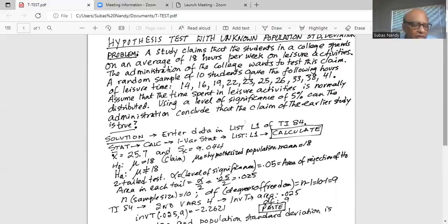Once we have entered the data in L1, then we will press stat and highlight calc on the top row, then number one, which is one-var stats. My list, I've entered the data in L1 should be L1, and I calculate. So my sample mean x bar is 25.7, and the sample standard deviation is 9.04.